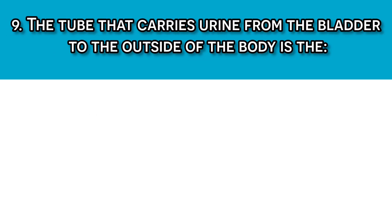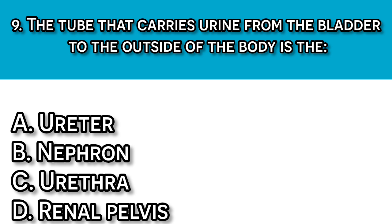Question number nine: The tube that carries urine from the bladder to outside of the body is the: A. Urea, B. Nephron, C. Urethra, D. Renal pelvis. Our answer should be C, urethra, because the urethra is the final passage for urine to exit the body.